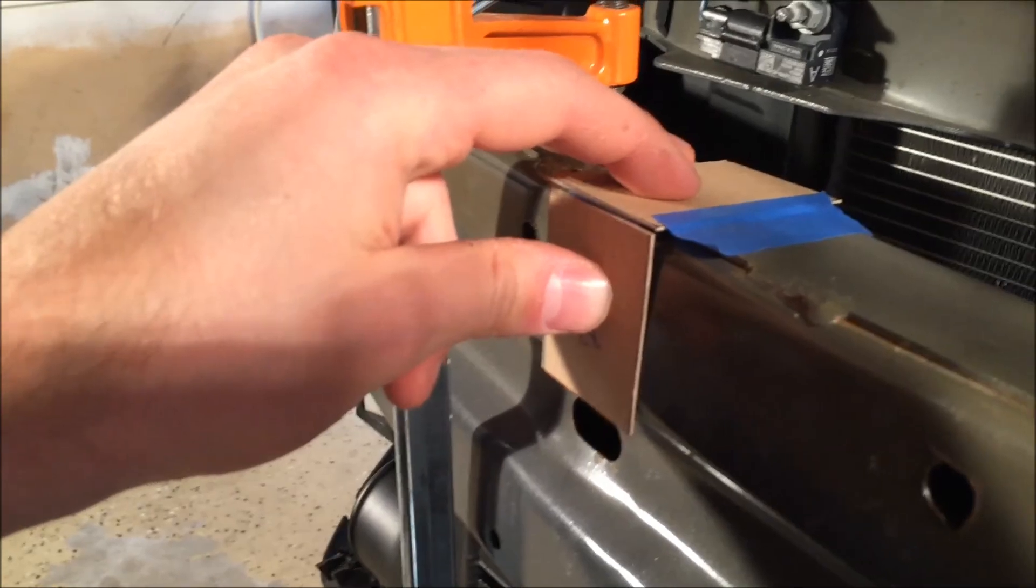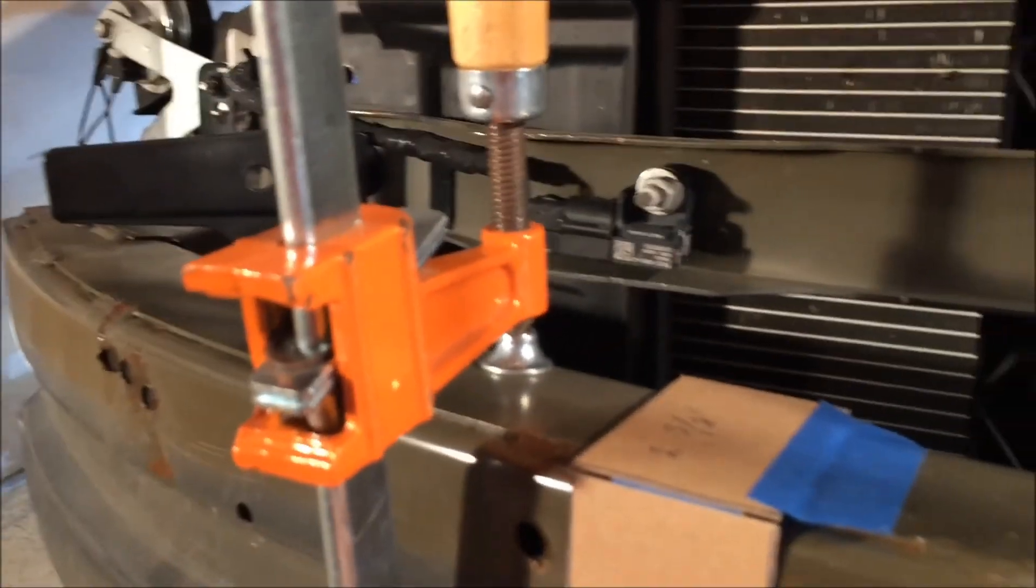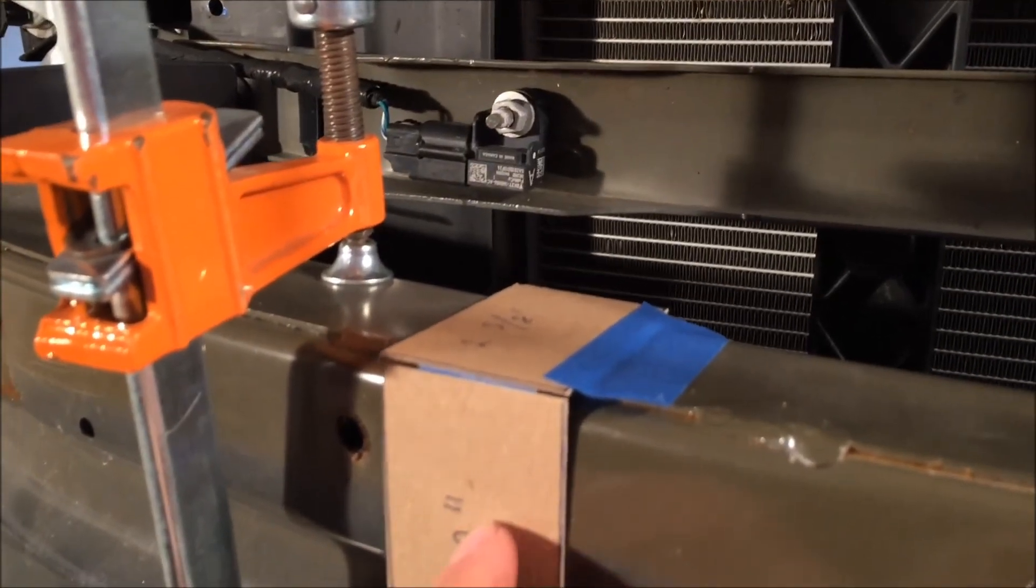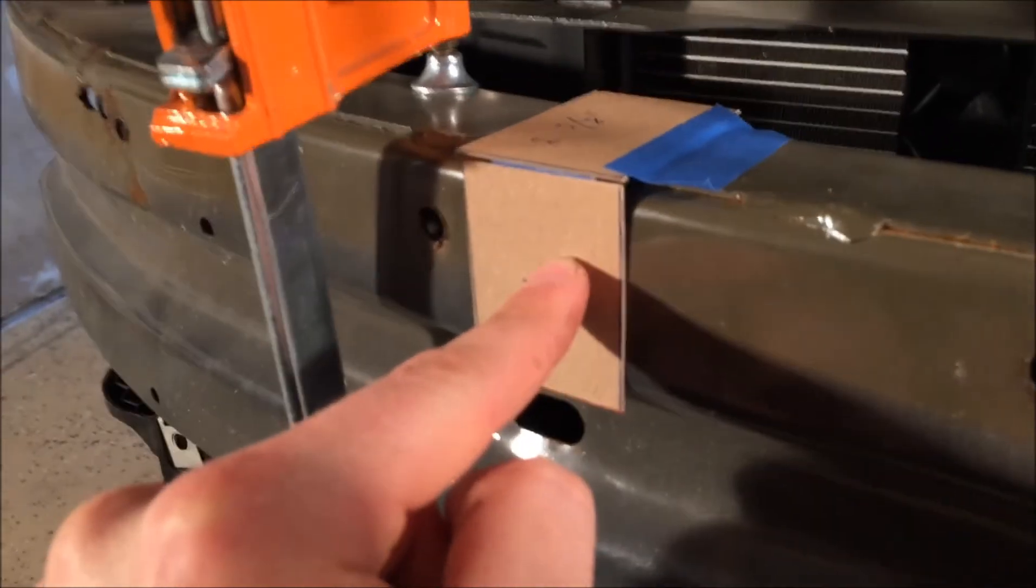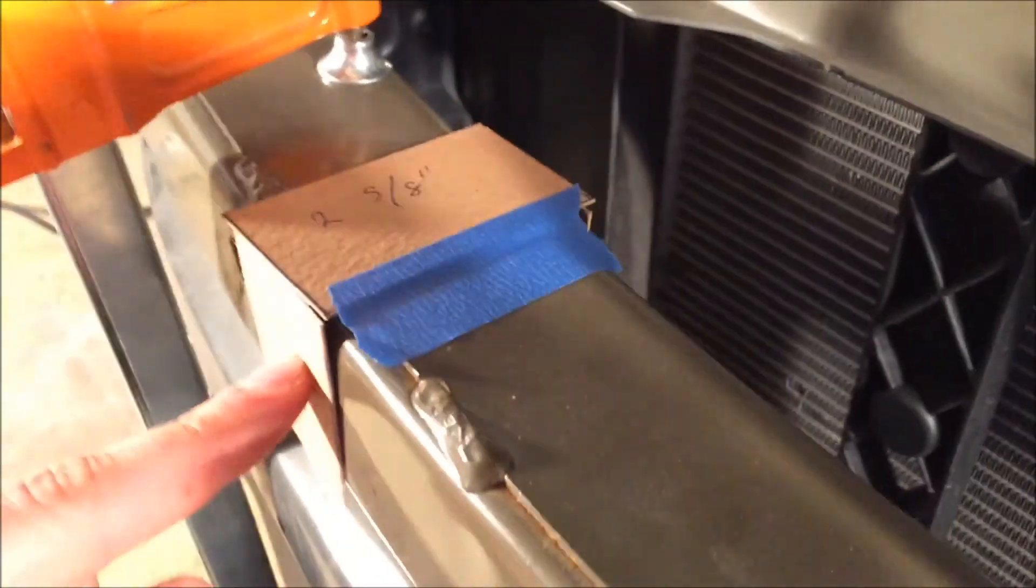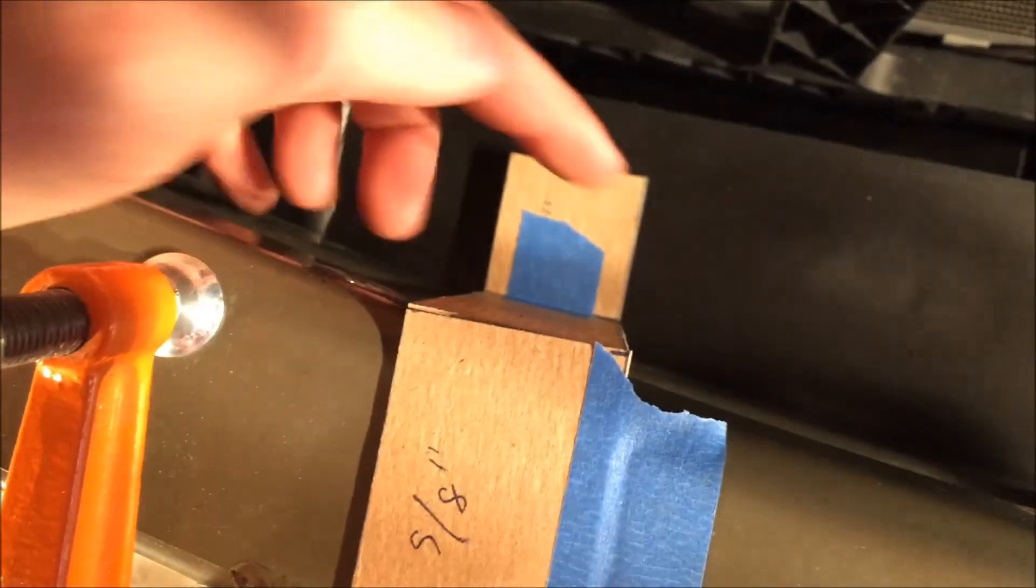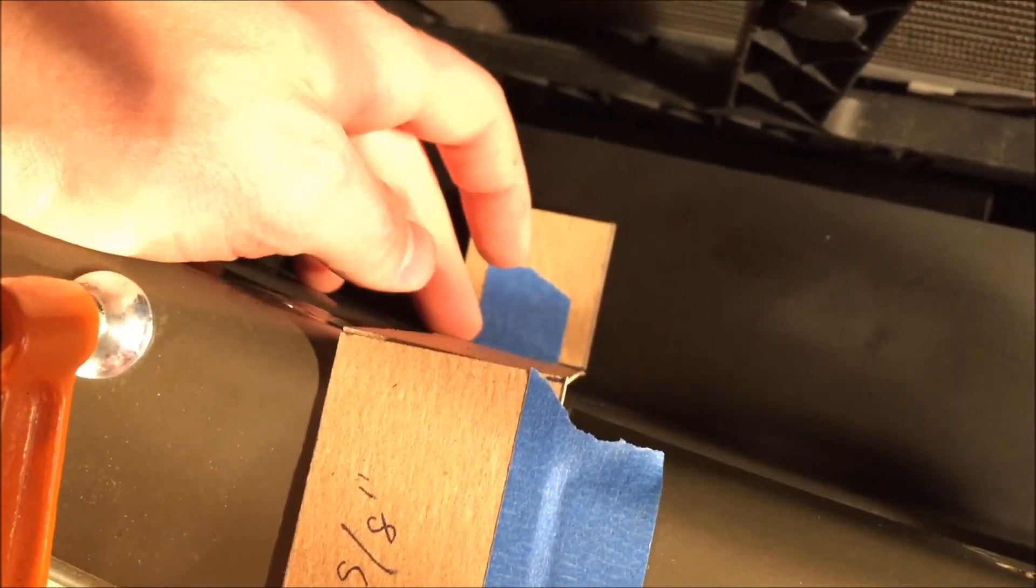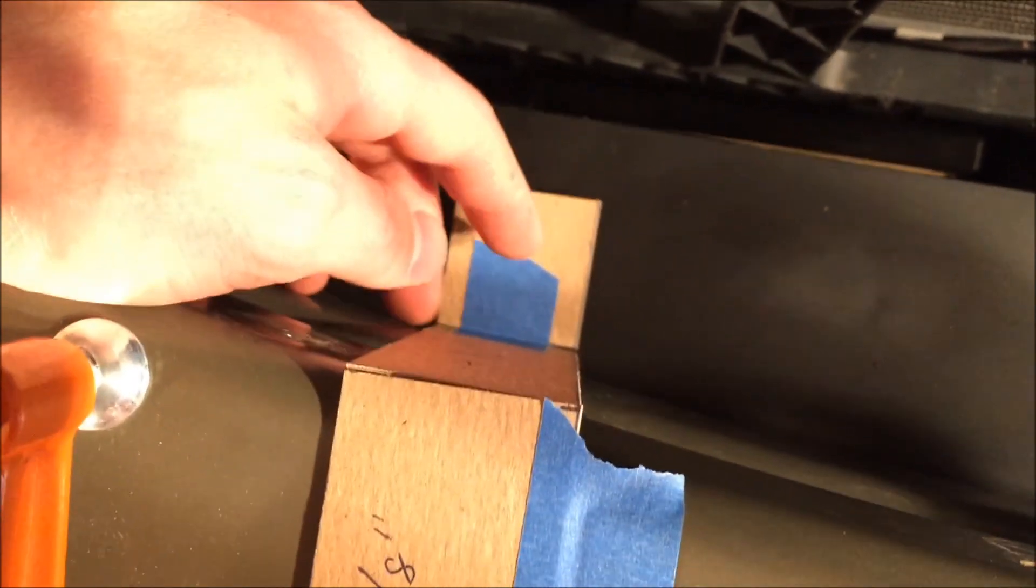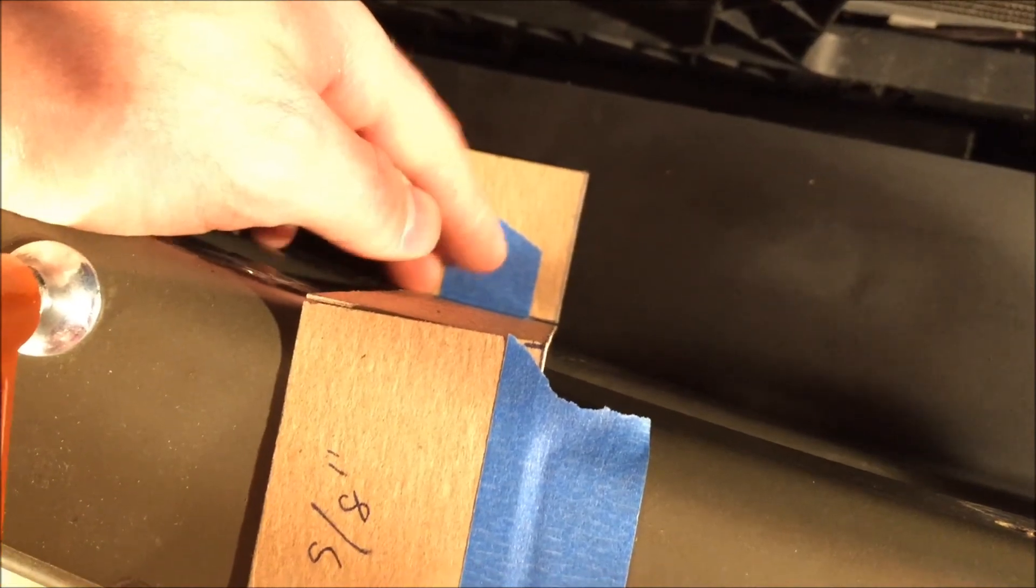So this looks good right here. I like this. I put the hole right in the center there. It's going to go right through, come out the other side, come out right here. And then we'll go drill a hole in the aluminum. I think we should be kosher.